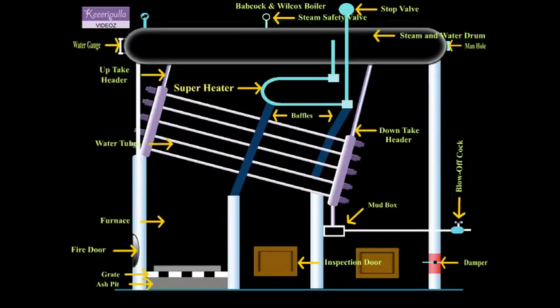Boiler Shell: It is a drum about 9 meters in length and 2 meters in diameter, placed horizontally. Half of the drum is filled with water.